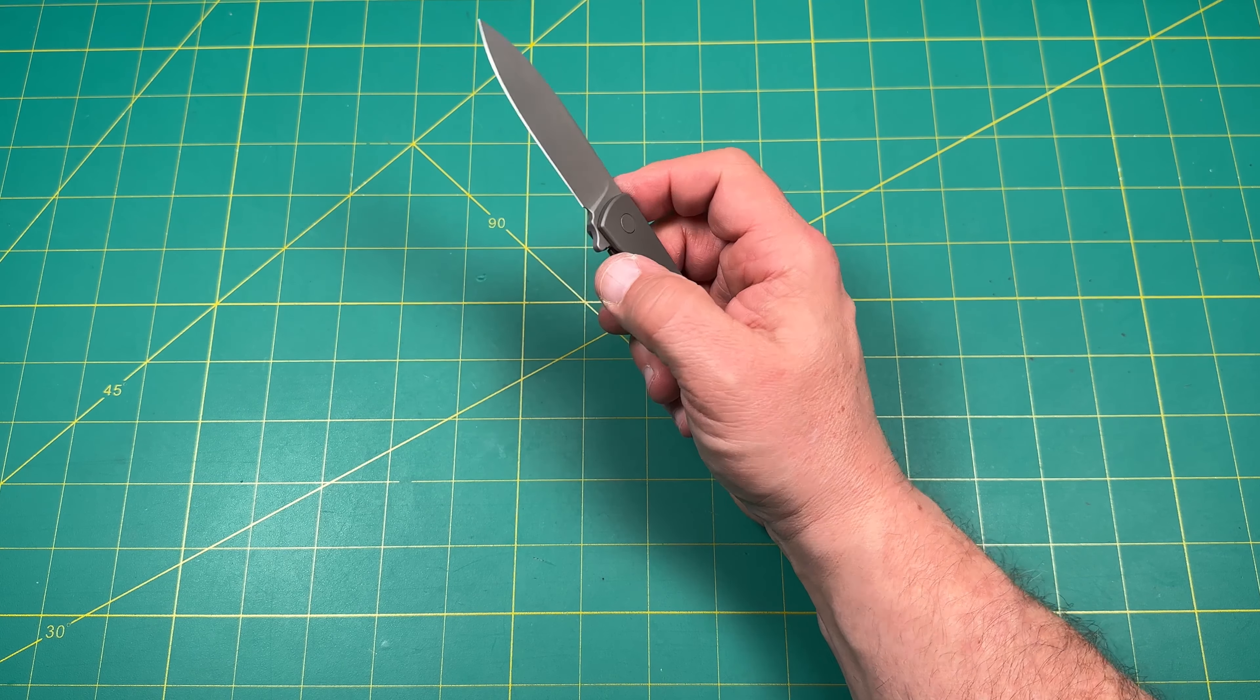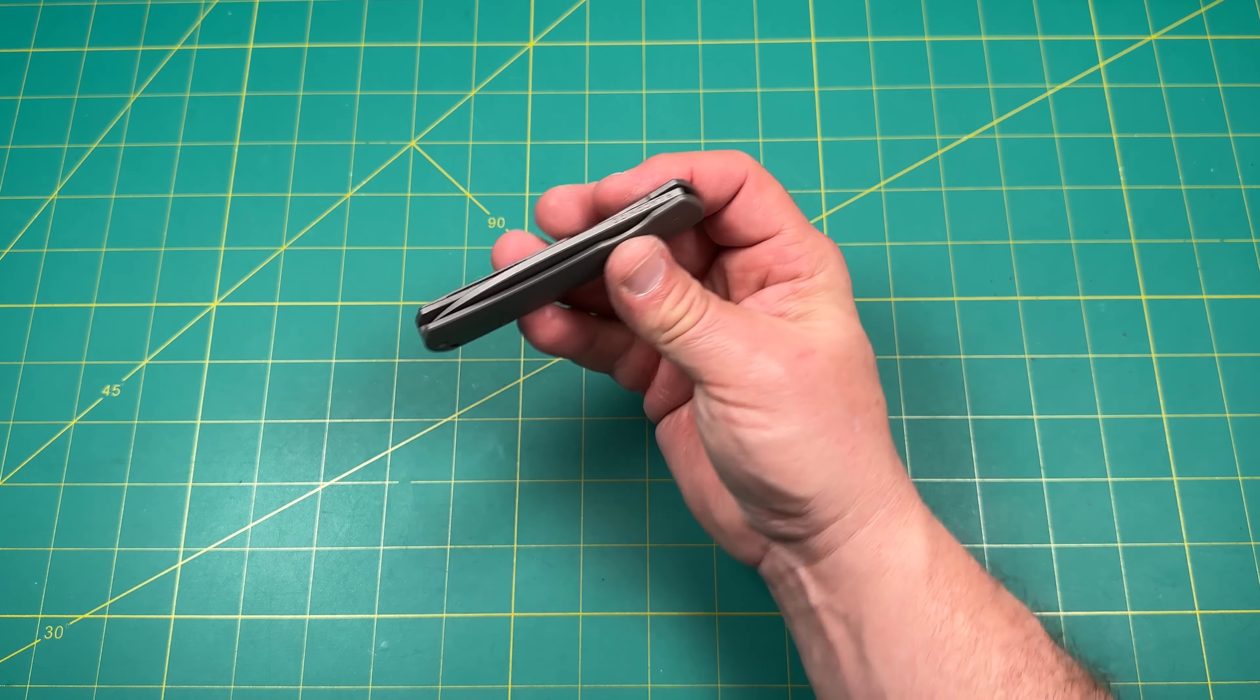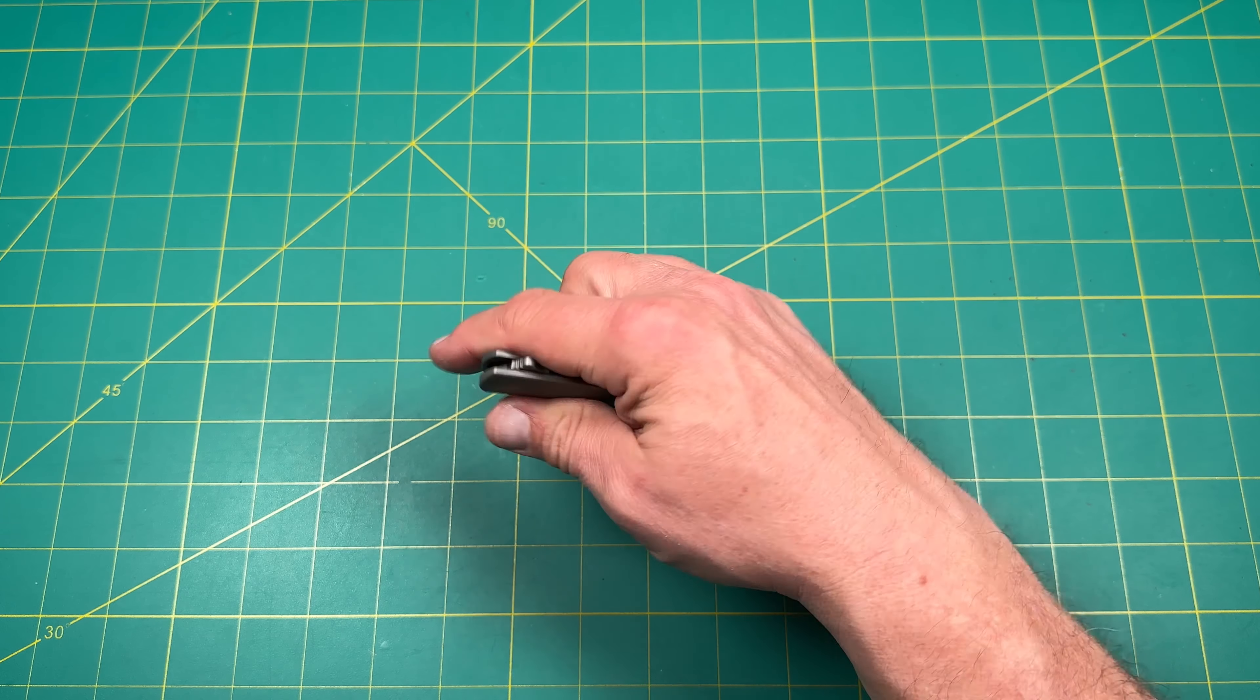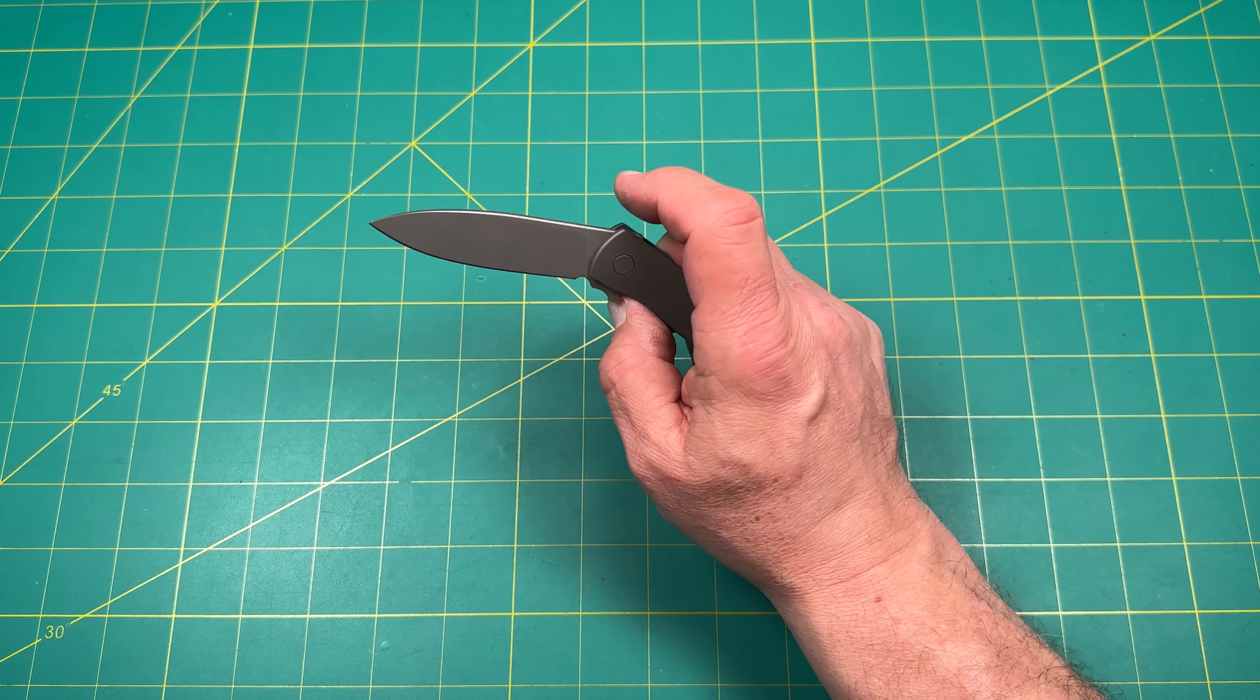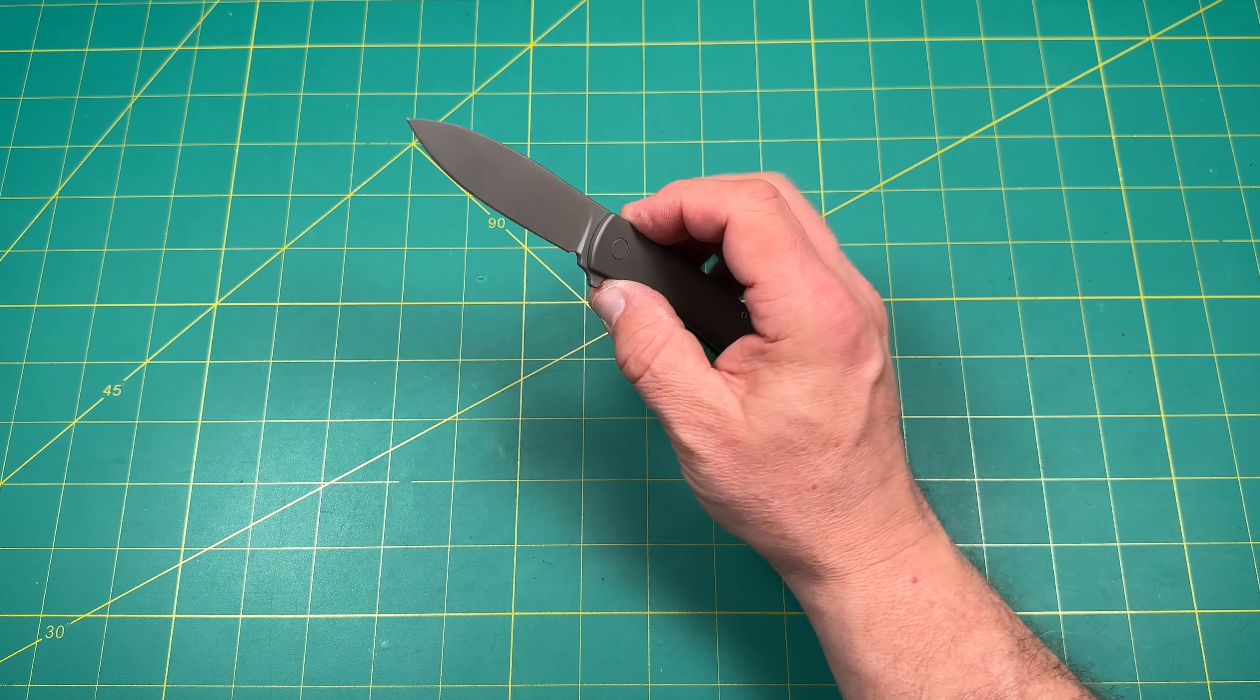So the design, handle, jimping, thumb studs, everything works really well. It's nice and easy. Great contoured shape. You can absolutely reverse flick it. Works really nicely. All that stuff, opening and closing is great. Closes well. You clear the clutch. All that good stuff. Fidget factor.